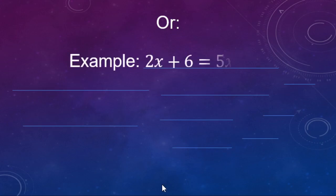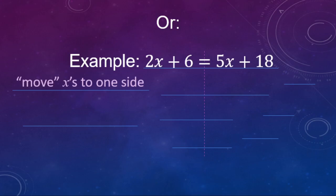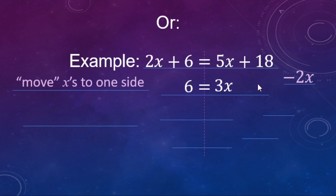Now we're going to do the same example — 2x plus 6 equals 5x plus 18 — but instead of moving the x's to the left-hand side, we're going to move them to the right-hand side. We'll do a minus 2x to both sides. So 2x minus 2x makes no x's, just a positive 6. And 5x minus 2x makes 3x, and we still have the plus 18. This way, you end up with a positive coefficient on your variable, which can make the arithmetic a little easier.